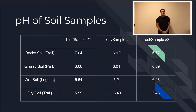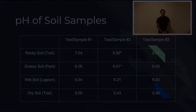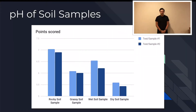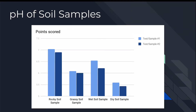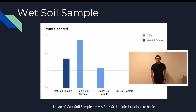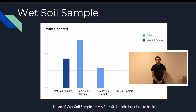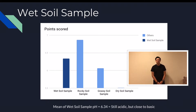As you can see in the data table, the three samples of each kind of soil have a consistent or similar pH level. Based on the mean pH of each soil sample, we determined that the wet soil sample was the closest to basic at 6.34, but it is still acidic as it doesn't go over 7.